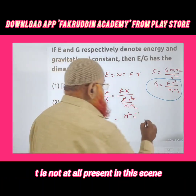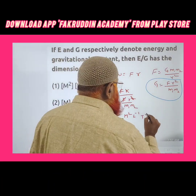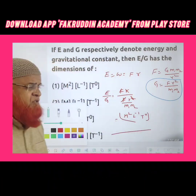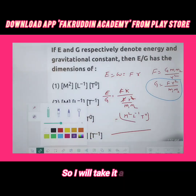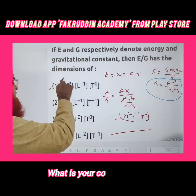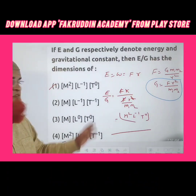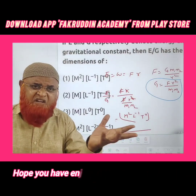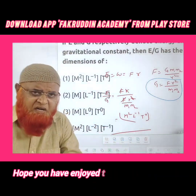T is not present in this expression at all, so T has power zero. Therefore the dimension of energy divided by G is M²·L⁻¹. The first option is your correct answer. Hope you enjoyed this simple short trick.